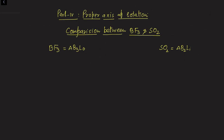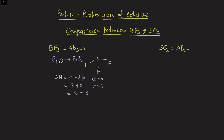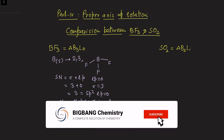Boron, atomic number 5, forms three covalent bonds with fluorine. The Lewis dot structure of boron trifluoride shows that the steric number — which is the number of sigma bonds plus lone pairs — equals 3 plus 0, giving 3. This means sp2 hybridization. Since the lone pair is zero, the electronic structure and molecular shape are equivalent, which is trigonal planar.